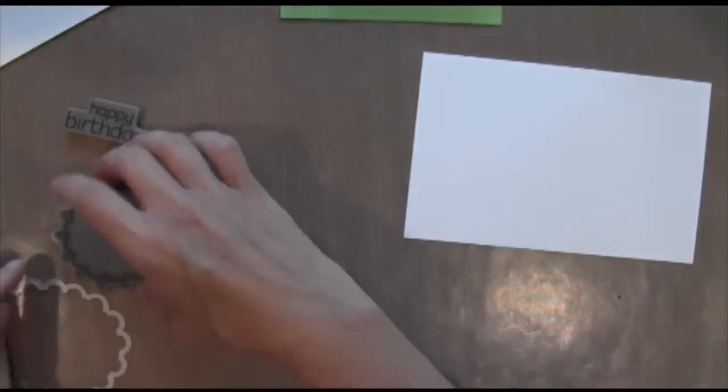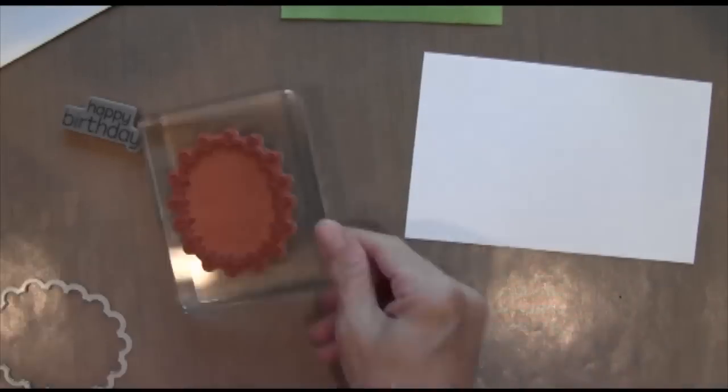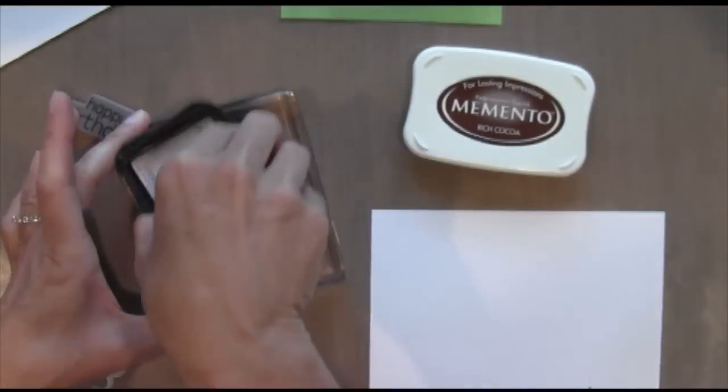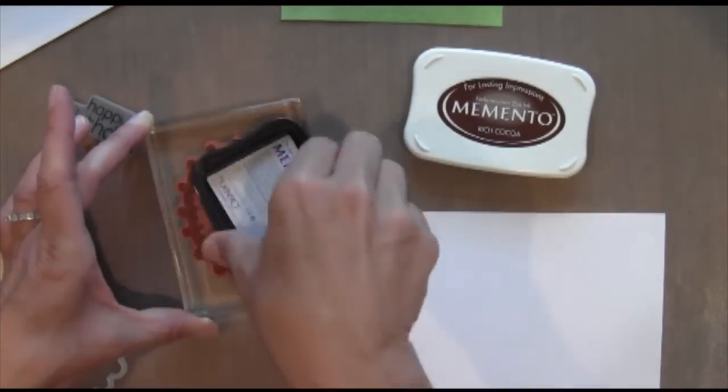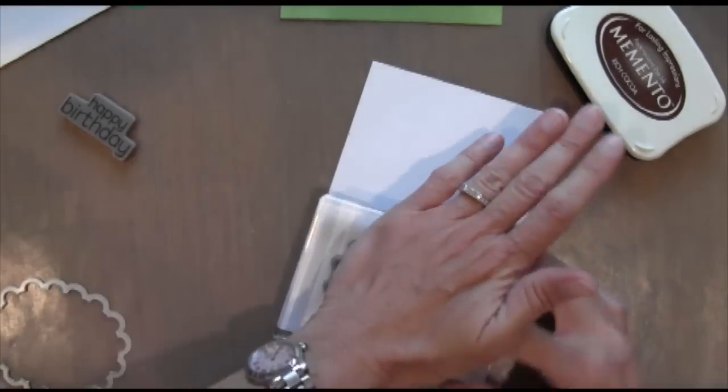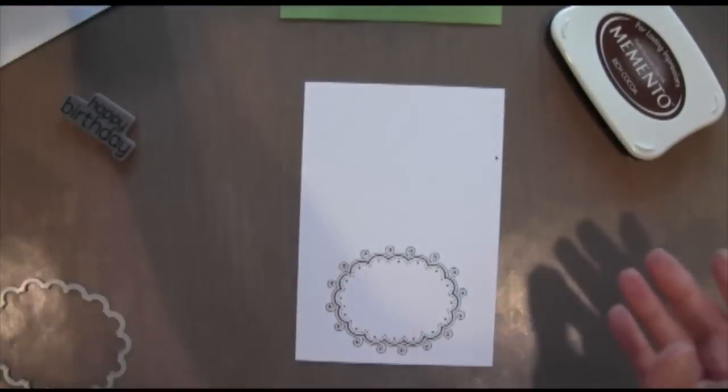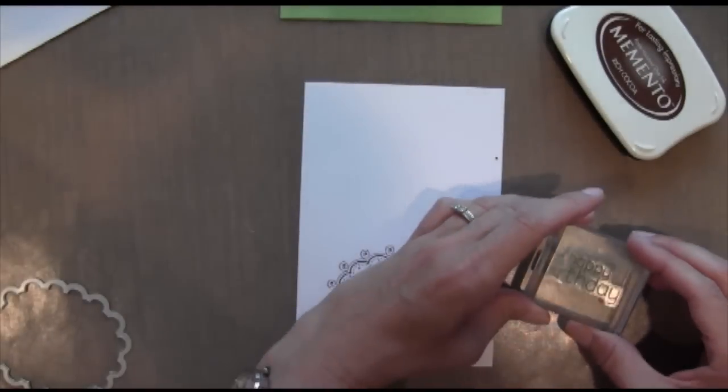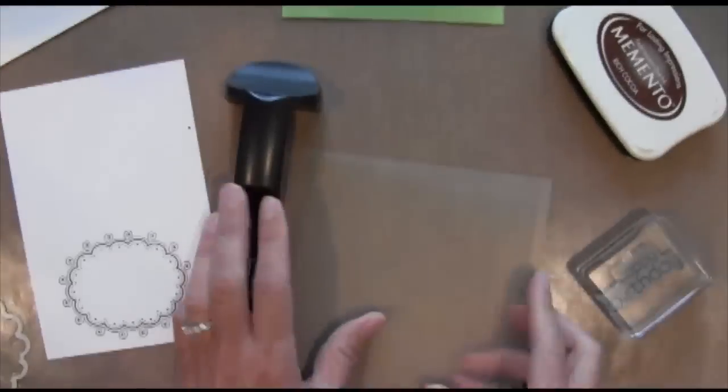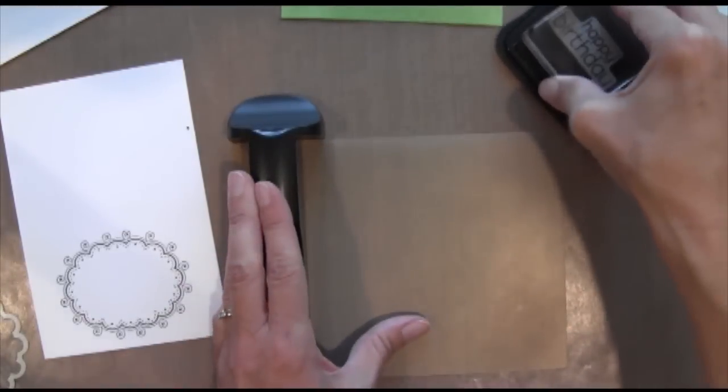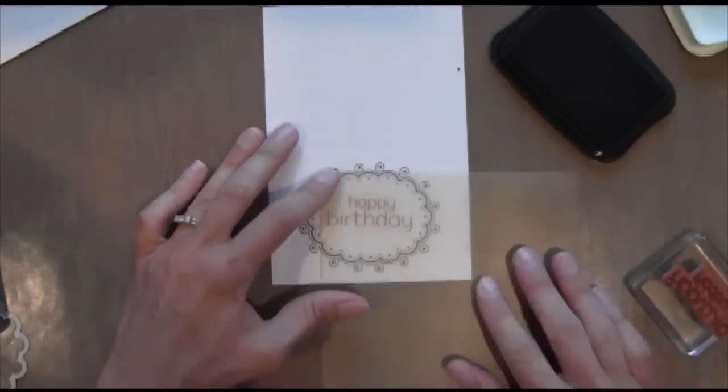I'm going to start with the tree. I'm using the Hero Sizzix combination of dies and stamps and some Memento Rich Cocoa ink. I'm just going to stamp that onto some Neenah cardstock because I'm going to be using Copic markers. And then I'm going to use the Happy Birthday Sentiment from that same set in my Stampin' Jig to make sure that I get it lined up just right in the middle.